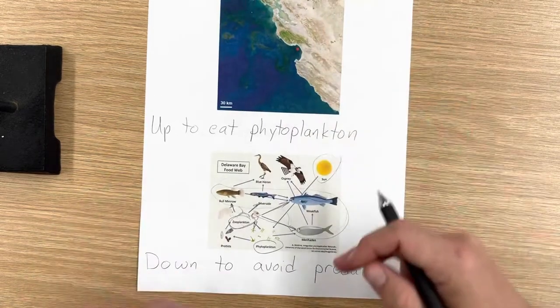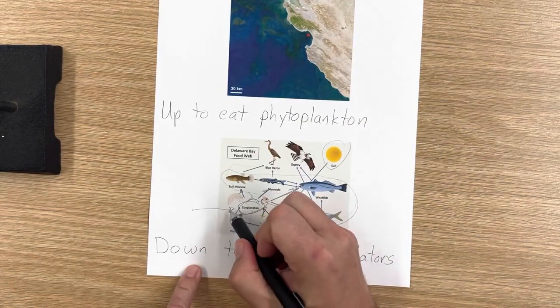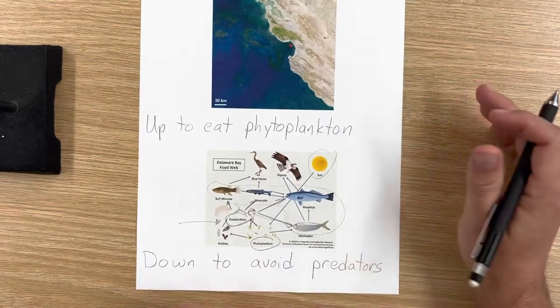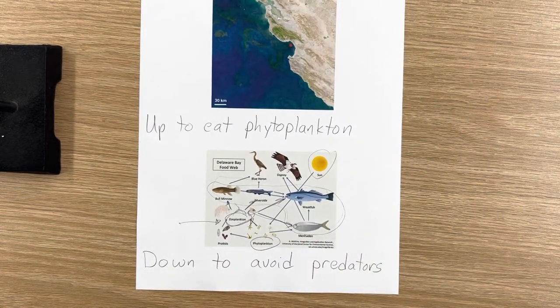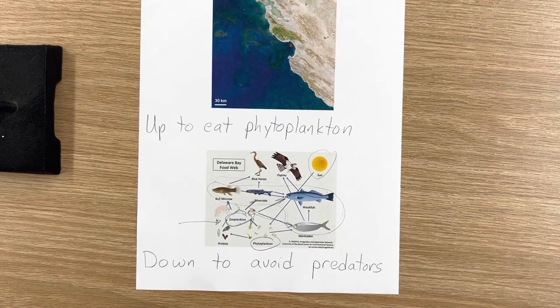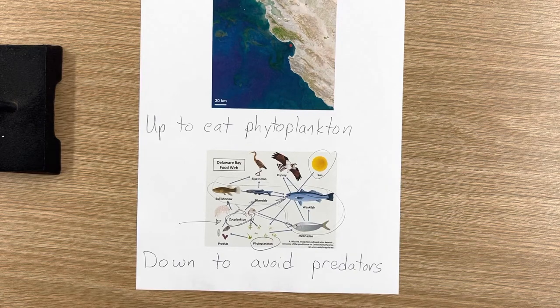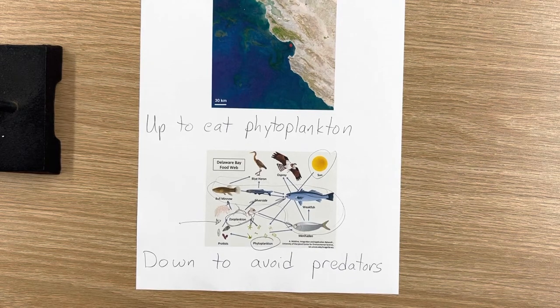And thus you get this up and down movement through the water column of these zooplankton. Only recently discovered. This is not something that has been known for hundreds of years. This was discovered in the last hundred years, probably even less than that, really. If you have any questions, let me know.